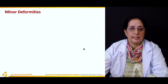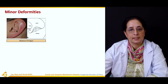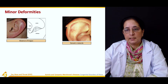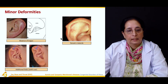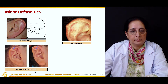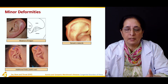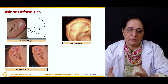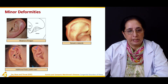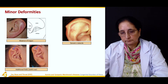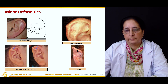Some minor deformities of the ear include absence of the tragus and Darwin's tubercle — a small tubercle on the outer edge of the auricle. There may also be additional folds in the ear and the satyr ear, which shows a normal protrusion. These minor deformities usually don't need to be fixed, and patients typically live normal lives with them.